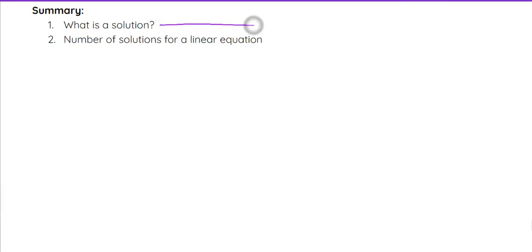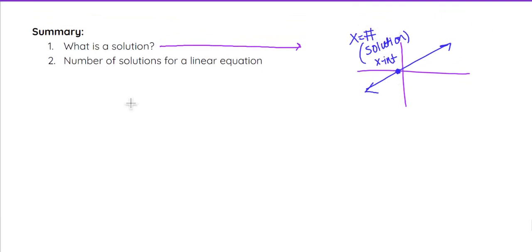Just as a reminder for a solution, graphically, visually, a solution to a linear function is going to be the point where it crosses the x-axis, the x-intercept. That is your solution. That is going to be written usually as an ordered pair for an x-intercept, but when you're talking solution, usually it's going to be written x = and then whatever number it's at on that x-axis.